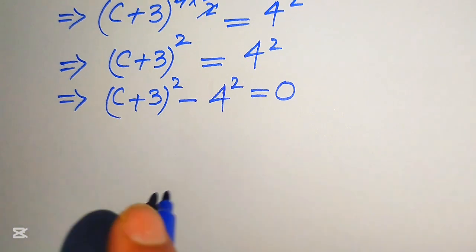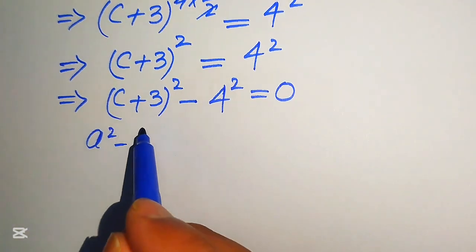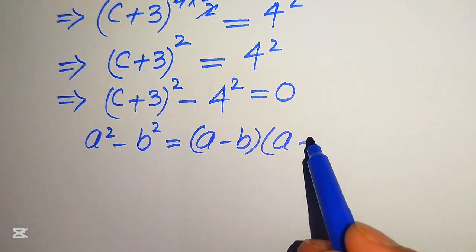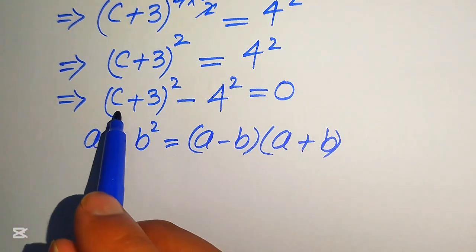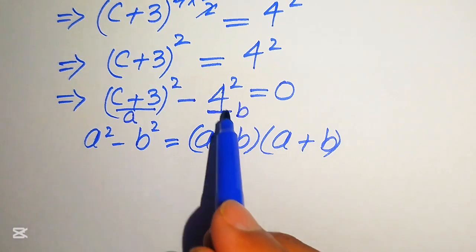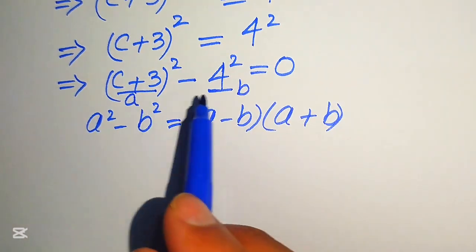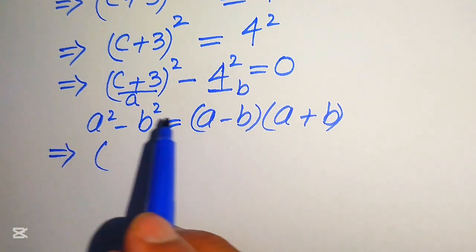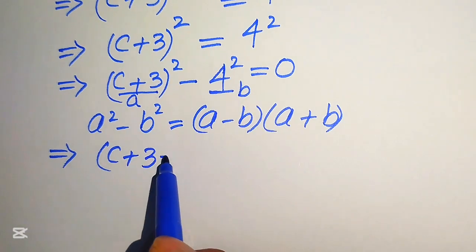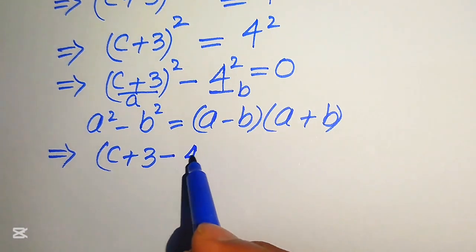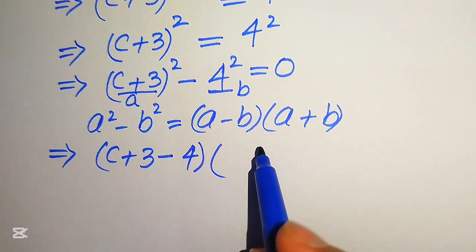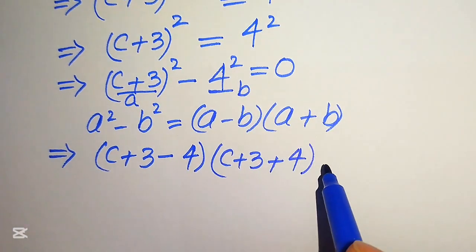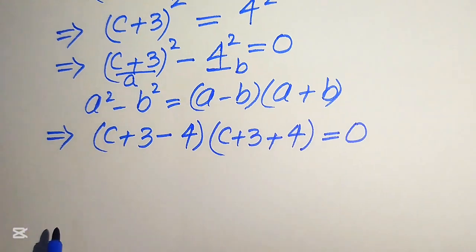In the next step we use the algebraic formula: a squared minus b squared equals (a minus b)(a plus b). Here the base of the first term is a and the base of the second term is b. Substituting, we have (c + 3 minus 4) times (c + 3 plus 4) equals 0.